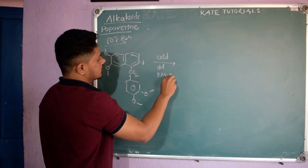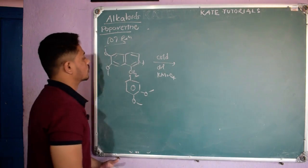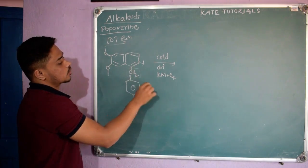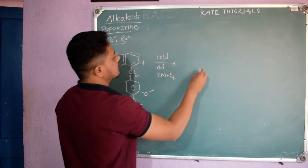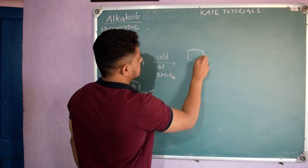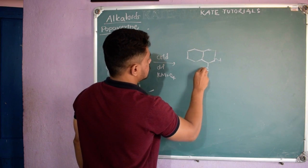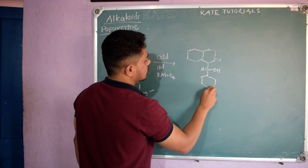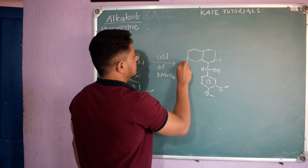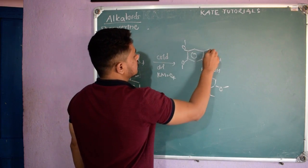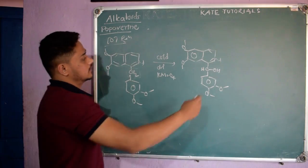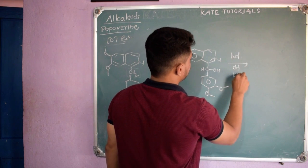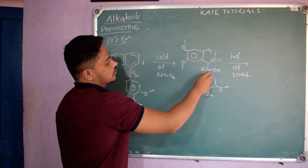When cold dilute KMnO₄ is added to papaverine, since it contains a CH₂ group, this oxidizing agent oxidizes it. The product has one H replaced by OH on the CH₂ group, while all other groups remain unchanged — OCH₃, OCH₃, OCH₃, OCH₃. This confirms the presence of the CH₂ group.